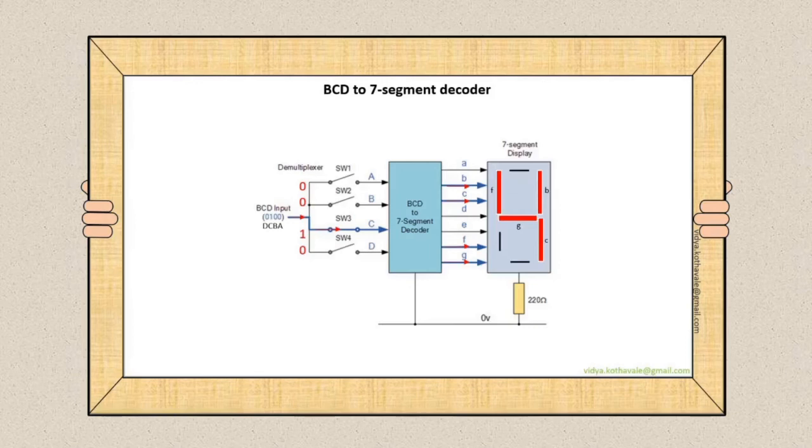To get the display of decimal 4, let's have a quick review of the idea. By applying the BCD input 0100 equivalent to decimal 4, the current flows only through path C of the BCD to 7 segment decoder. Further, the current flows only through the segments B, C, F and G, and this is how only the 4 segments glow and we get a display of decimal 4.